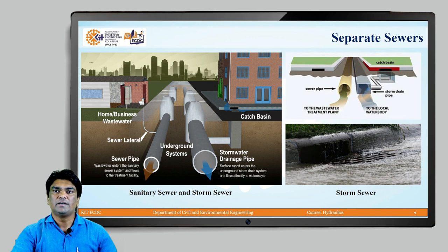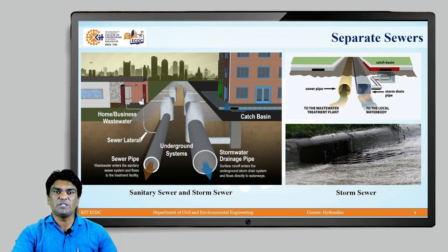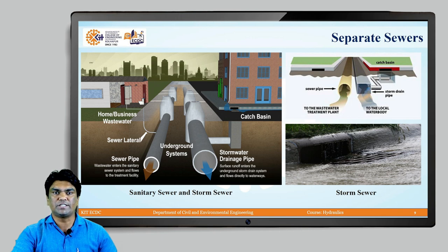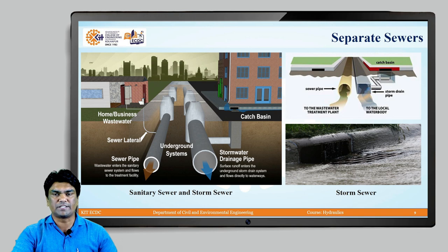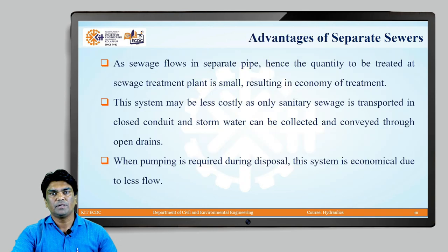In this slide, the separate sewer system and its diagram are shown. In the separate sewer system, two sewers have been used: the first collects sewage from household and industrial levels, and the second collects storm water from roofs and streets. Two separate sewers have been provided, which is why it is called a separate sewer system. The diagram shows sanitary sewers and storm sewers separately, and also illustrates how storm water is collected from the streets.